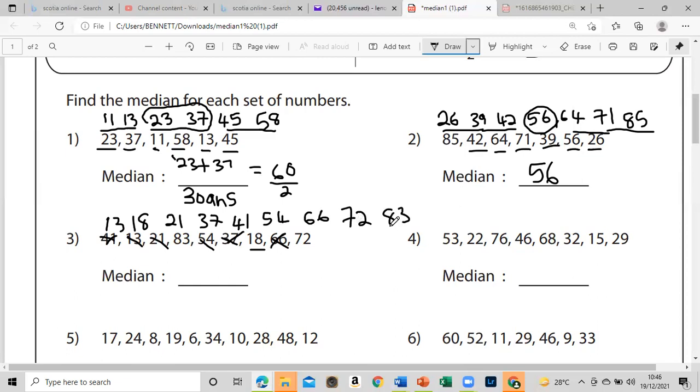That means we're going to have one particular number. We don't have to divide by two. Let's take two from this side, two from this side, one from this side, one from this side, one from this side, and one from this side. So our median would be 41.